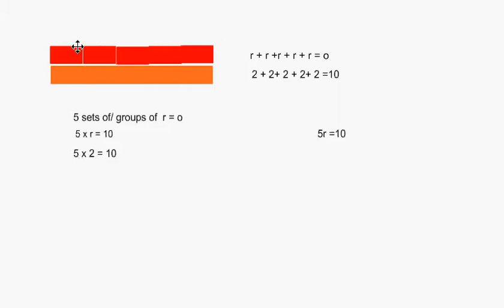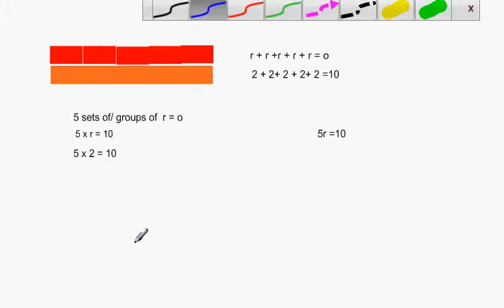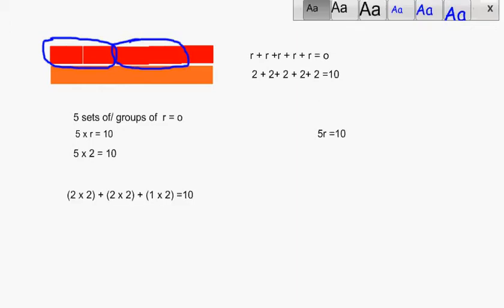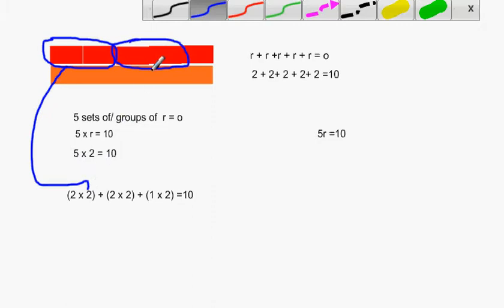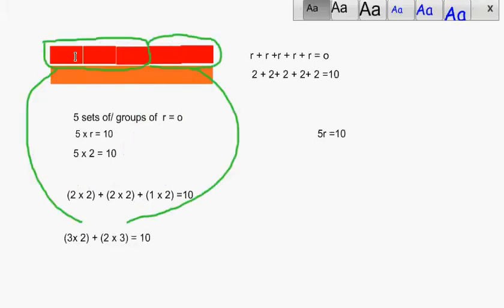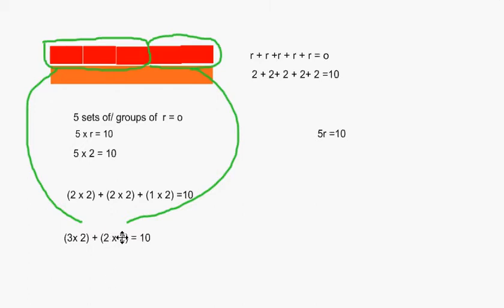We also want to use a question like this to look at some other ideas around mathematics. So if I took these groups of 2 and then another group of 2, what mathematics could I write for that? I can use the associative property and say I've got 5 groups here, but I could break it down into 2 groups of 2, then add that plus another 2 groups of 2 plus another 1 group of 2, giving me a total of 5 groups of 2, which gives me 10.